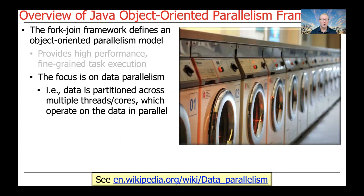The focus of the fork-join framework is on data parallelism. In particular, data is partitioned across multiple threads and cores, which then operate on that data in parallel. This is very much the embarrassingly parallel model discussed earlier, such as the laundromat example, where you put your laundry in different washers or dryers and have them all run in parallel with little or no interaction between the processing taking place.